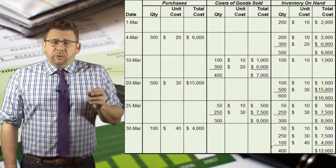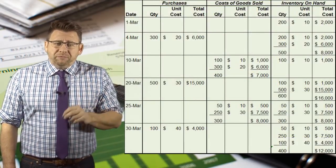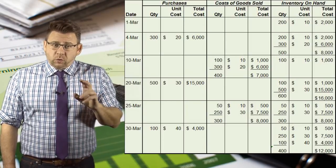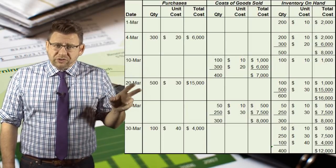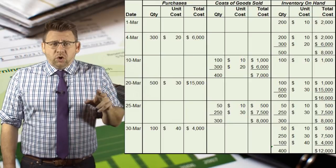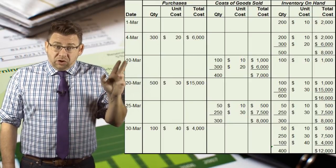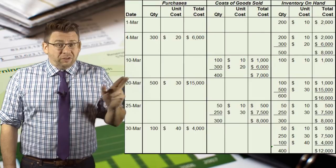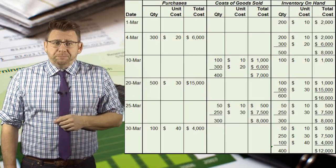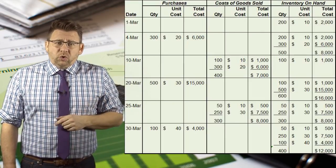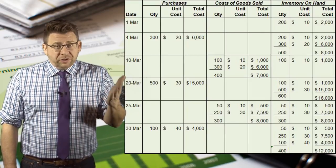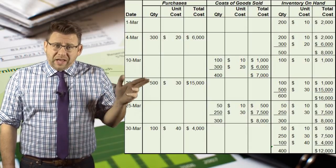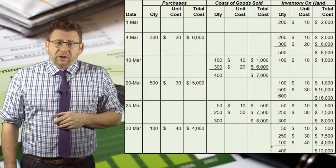Finally, if we were completing a perpetual inventory record, you can see the purchases were entered in the purchase columns. The units sold are recorded, and notice that they are the same total cost of goods sold that we've already computed. Ending inventory is a running total that results in 400 units of inventory with a cost of $12,000.